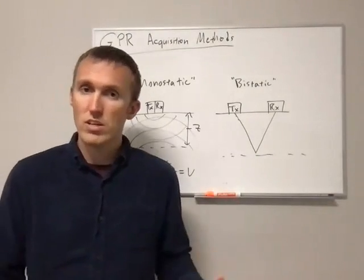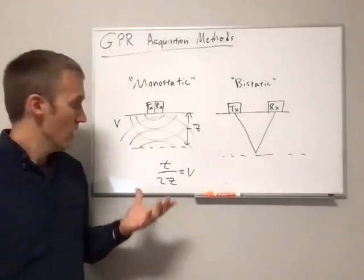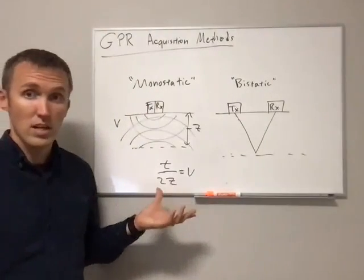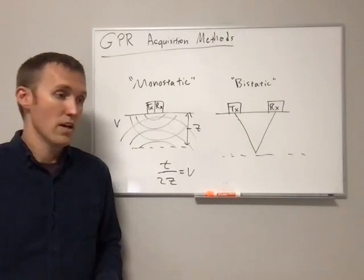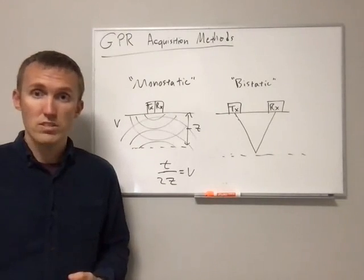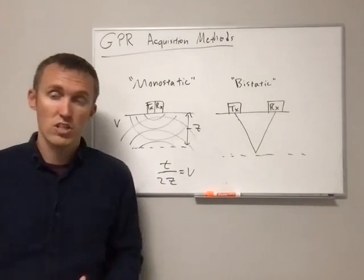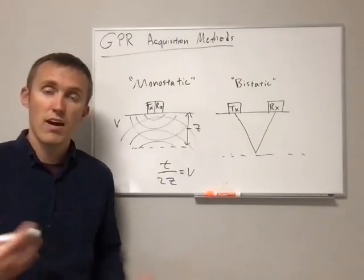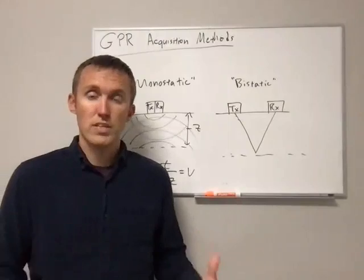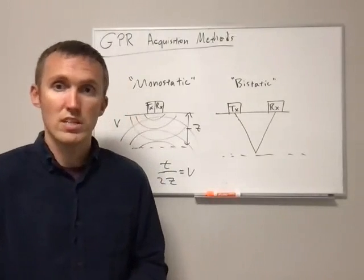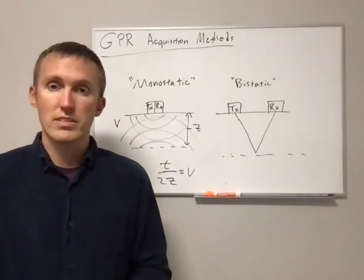If we have a borehole or some information about the geology of the area, we can try to work out what these other quantities are. These quantities are really of interest — for example, the depth to the water table, the velocity of a particular geologic material, and how that relates to other properties like strength, things we've talked about with seismic data. We can't do that with the monostatic system.